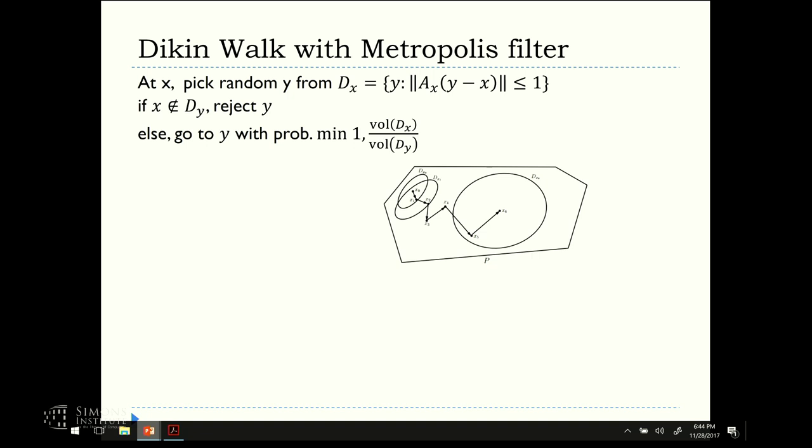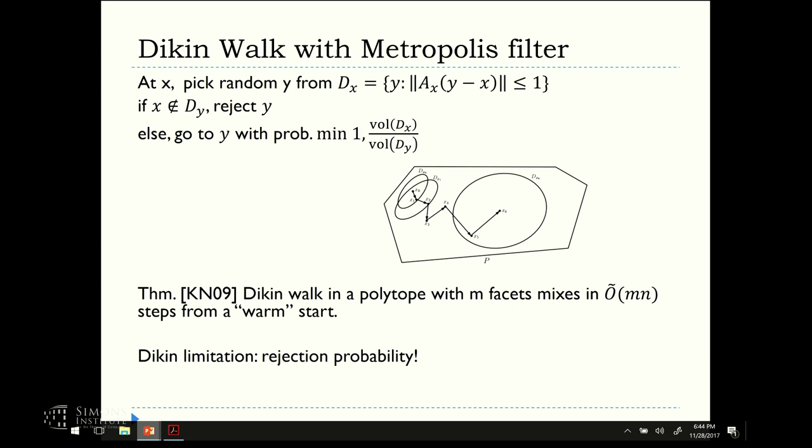So nice as it is, and this has one very nice property, which is that it's affine invariant now. So scalings of the original body don't matter. You don't have to do any rounding. That's nice. You can't afford to make these ellipsoids too large, because then the ratios of the volumes will go crazy, and you still need to keep them bounded. So that leads to this MN bound even from a warm start, and the limitation again is this rejection probability.